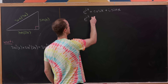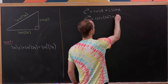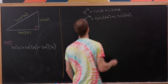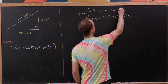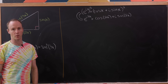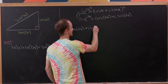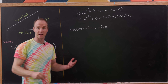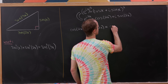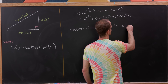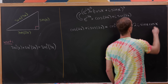Observe that e to the i2x equals cosine of 2x plus i times the sine of 2x on one hand. On the other hand, it's equal to the expression above squared, meaning cosine x plus i sine x, all squared. Multiplying that out like a binomial and arranging real and imaginary parts, we get cosine squared x minus sine squared x as the real part, plus 2i times sine of x times cosine of x as the imaginary part.